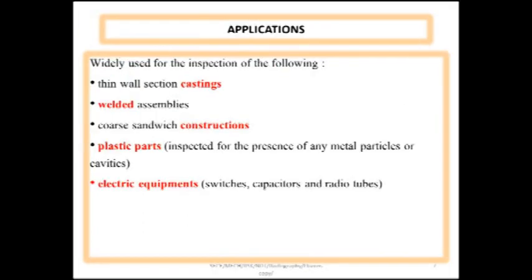When we come for applications, it is widely used in thin wall section castings, welding assemblies, coarse sandwich constructions, and plastic parts. In the case of plastic parts, this particular process is used for inspecting the presence of any metal particles or cavities inside the plastic parts. For electrical equipments, this process is used for switches, capacitors and radio tubes.